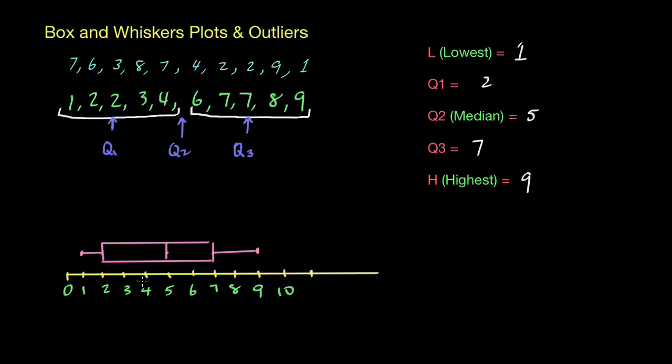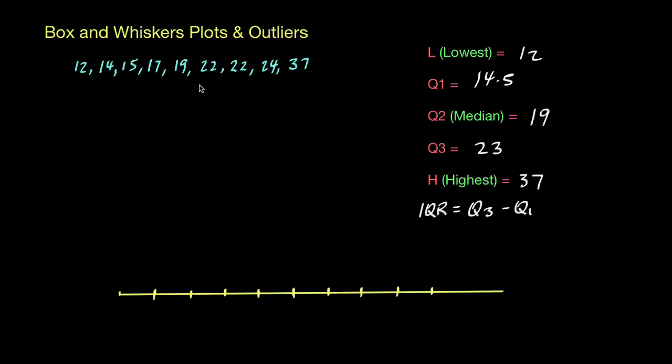We'll try one more and we'll have a look at what happens when we have outliers inside of these box and whiskers plots. So in this example we're going to once again create a box and whiskers plot, but we're also going to mark off any outliers that exist within the data set.